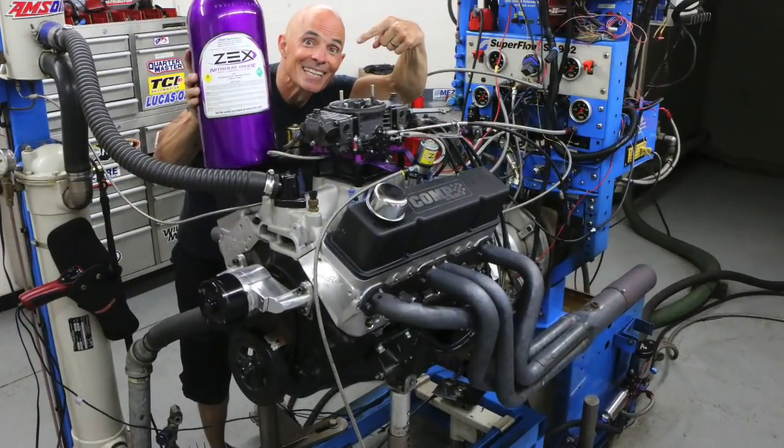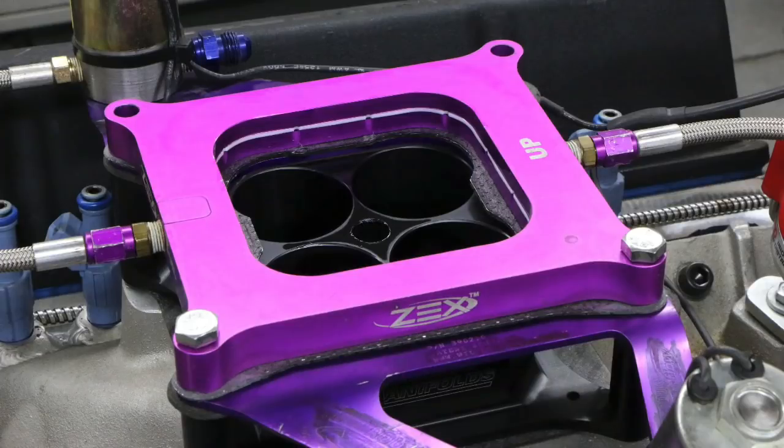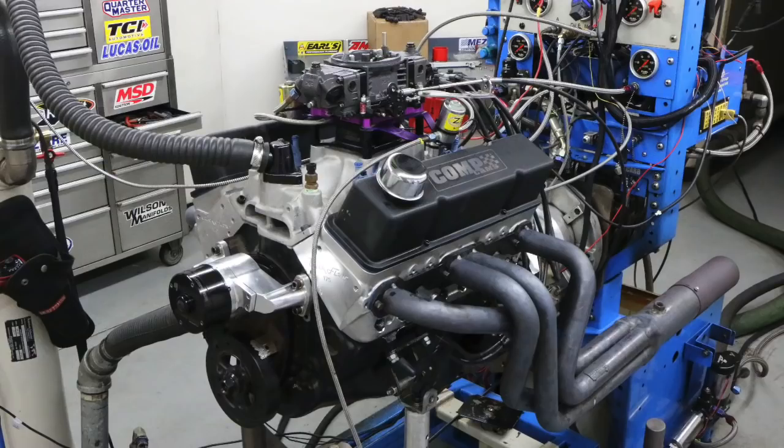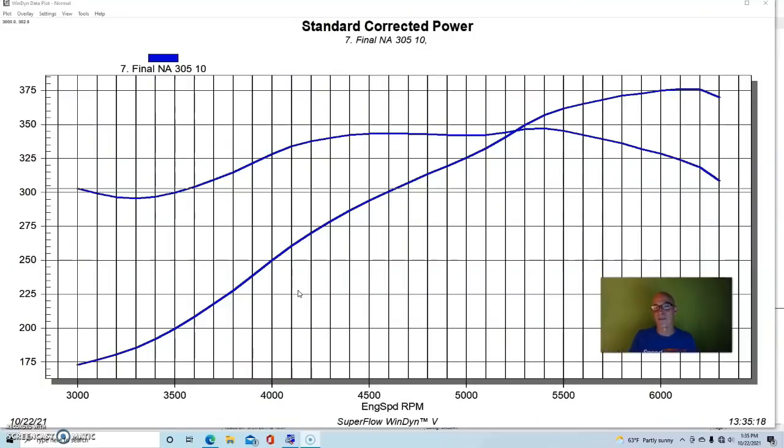We're going to start our salute to power adders on small block Chevys with nitrous. In fact, it's a nitrous injected 305, so it's got a lot going for it. Before you start jumping on the bandwagon saying those 305s are junk, they actually make fairly good power if you build them correctly. No, it's not going to make the power that a larger 350 does or anything that has a good four inch bore.